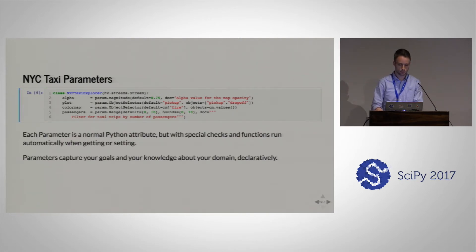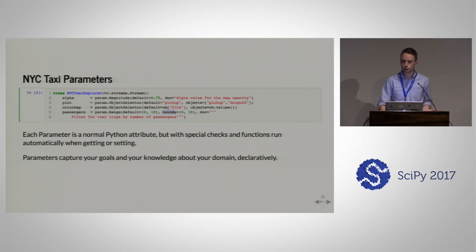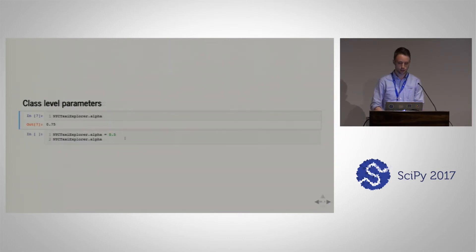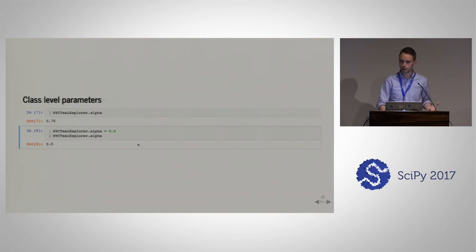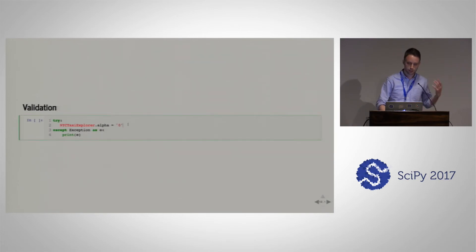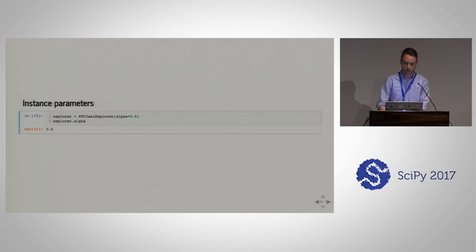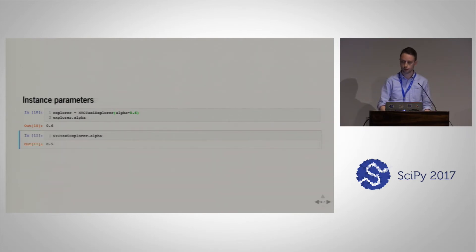Now that we've declared this class, we can use it. Each parameter has certain information associated with it — for example, we've told it that the passenger count has to be between zero and ten, since taxis generally don't take more passengers than that. We can use these just like regular attributes. At the class level, we can declare a parameter and it will persist at the class level. But if we try to set the alpha to a string value, it will tell us that's not allowed — it's meant to be a numeric value. And we can create an instance with a different alpha value, which is separate from the class-level default.